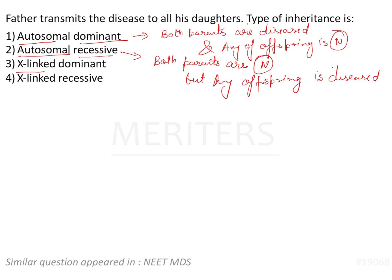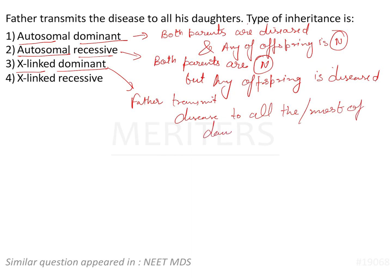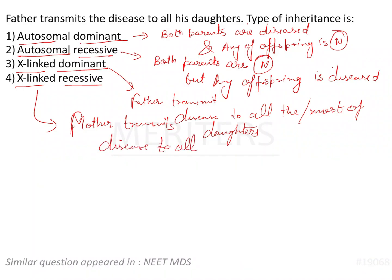For X-linked dominant, the father transmits the disease to all — or most — of the daughters. For X-linked recessive, the mother transmits the disease to all or most of the sons. If you remember all these statements, you will be able to solve any pedigree.